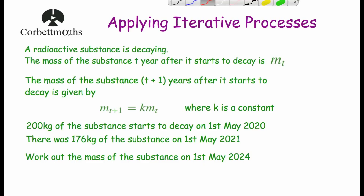In our last question, a radioactive substance is decaying. The mass of the substance T years after it starts to decay is MT, and the mass T plus 1 years after decay is given by the iterative formula MT+1 equals K times MT, where K is a constant. We're told there are 200 kilograms of the substance starting to decay on the 1st of May 2020, and the mass was 176 kilograms on the 1st of May 2021. We need to find the mass on the 1st of May 2024.